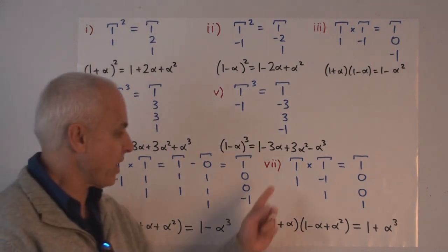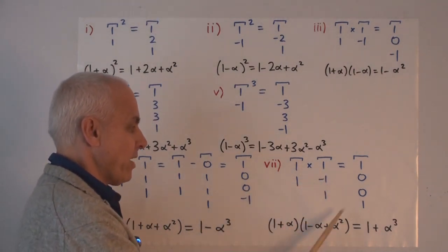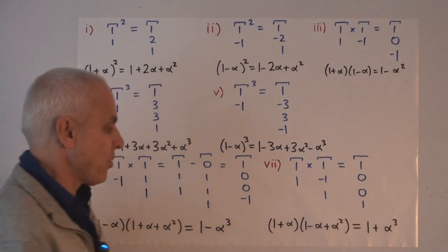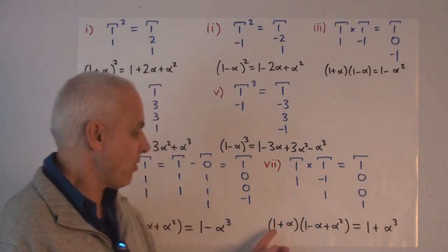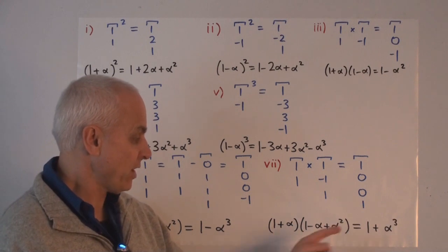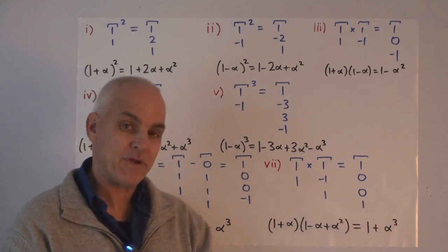And a slight variant where we have 1, 1 over here times 1 minus 1, 1. Then we get 1, 0, 0, 1 corresponding to this identity here. (1 + α)(1 - α + α²) = 1 + α³.